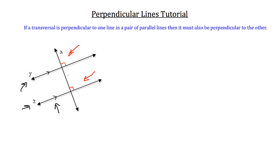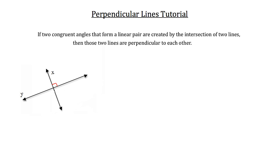So if X is perpendicular to Y and Y and Z are parallel, then X must also be perpendicular to line Z. That's the second important theorem. The last theorem is: if two congruent angles that form a linear pair are created by the intersection of two lines, then those two lines are perpendicular. In this case, the two lines are Y and X. At their intersection, we have two angles: this angle on the right, indicated by the red 90 degrees, and the angle on the left. Because the angle on the right is 90 degrees, the angle on the left is 90 degrees as well.